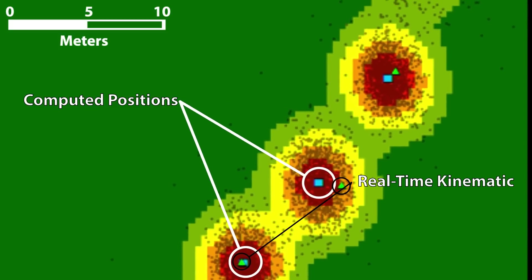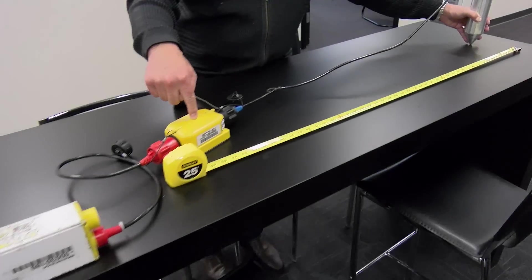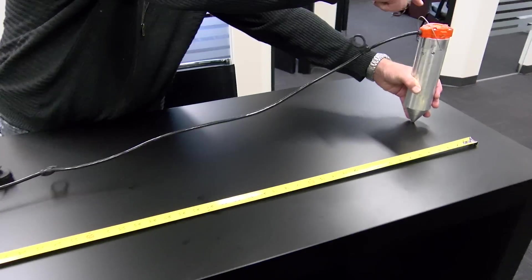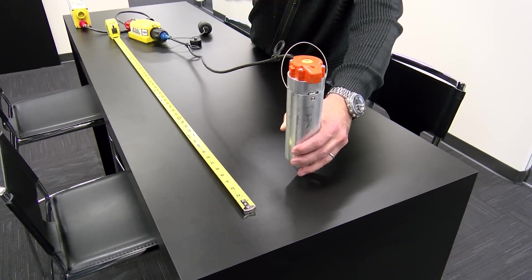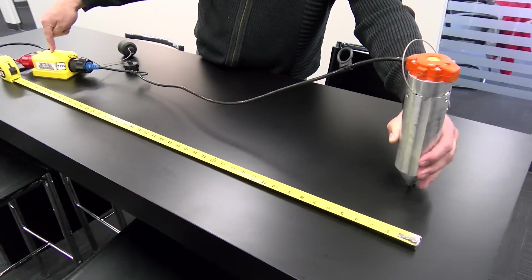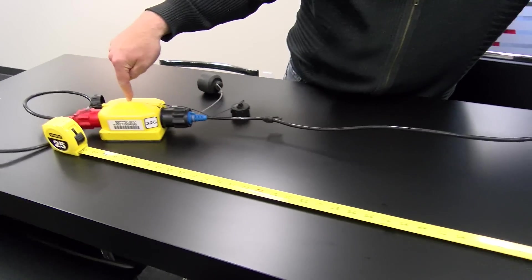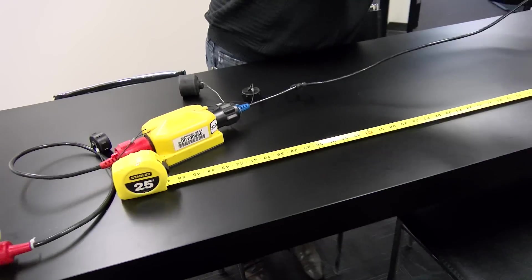Note here a key difference is that the survey in the field, the RTK survey in the field, is measuring the position of the actual sensor in the ground, which could be up to a meter different than the node itself on the end of a 1.2 meter cable.